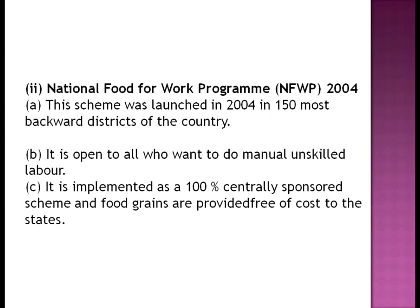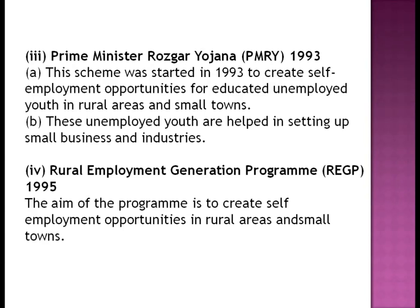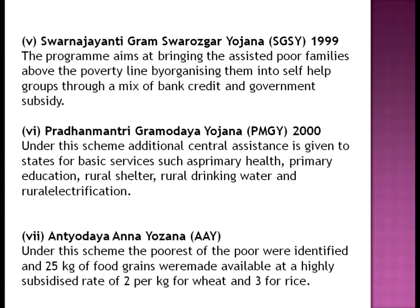Other anti-poverty programs include: National Food for Work Programme; Pradhan Mantri Rozgar Yojana (PMRY); Swarnajayanti Gram Swarozgar Yojana (SGSY) 1999; Pradhan Mantri Gram Sadak Yojana 2000; and Antyodaya Anna Yojana (AAY). The AAY is also discussed in detail in the Food Security in India chapter. Please write these points in your notebook.